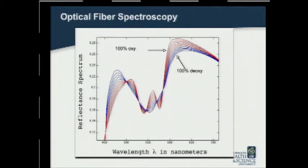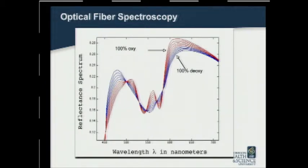Optical fiber spectroscopy utilizes visible light spectra of oxygenated hemoglobin, seen here in red, as compared to deoxygenated hemoglobin, to determine bulk tissue oxygen saturation that is not reliant on blood flow. Fraction of blood volume is calculated by applying a diffusion theory-based module to raw data collected by the probe.